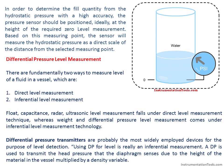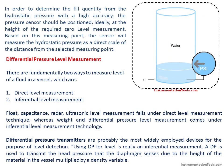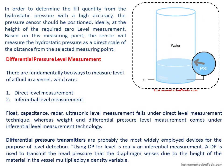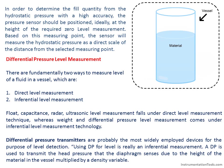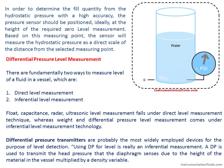In order to determine the fill quantity from the hydrostatic pressure with high accuracy, the pressure sensor should ideally be positioned at the height of the required zero-level measurement. Based on this measuring point, the sensor will measure the hydrostatic pressure as a direct scale of the distance from the selected measuring point.